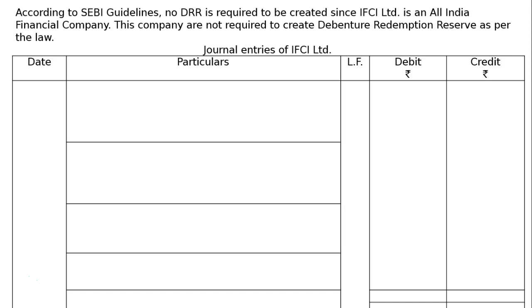Now, let us write the general entries of IFCI Ltd. We have to draw the proper format with date, particulars, Ledger Folio, and debit and credit columns with rupee symbols.